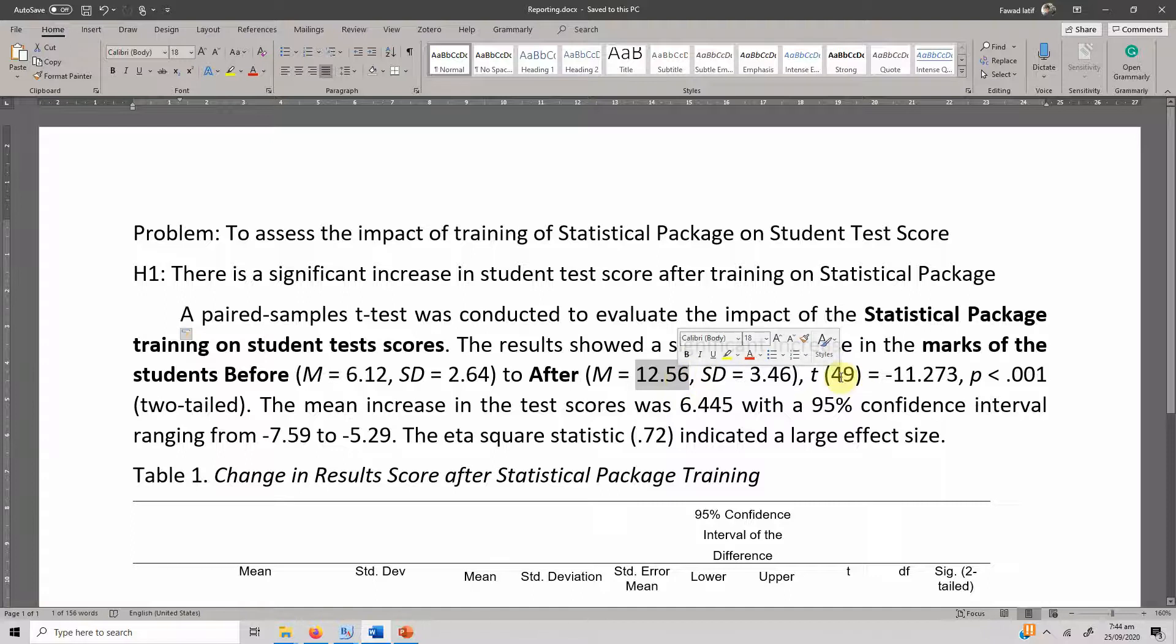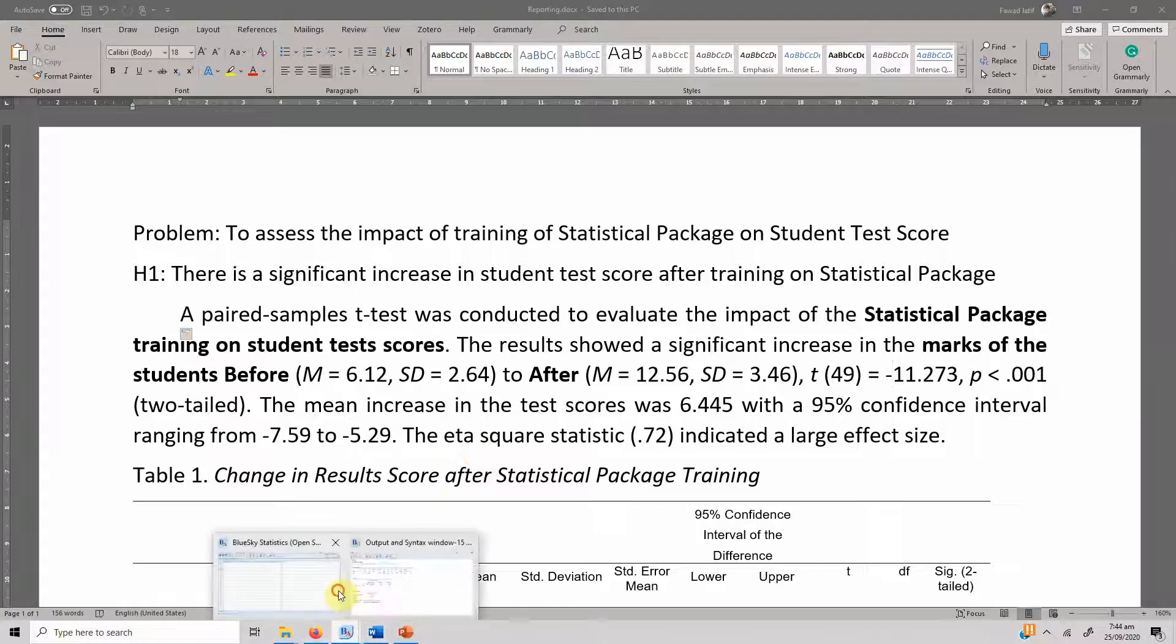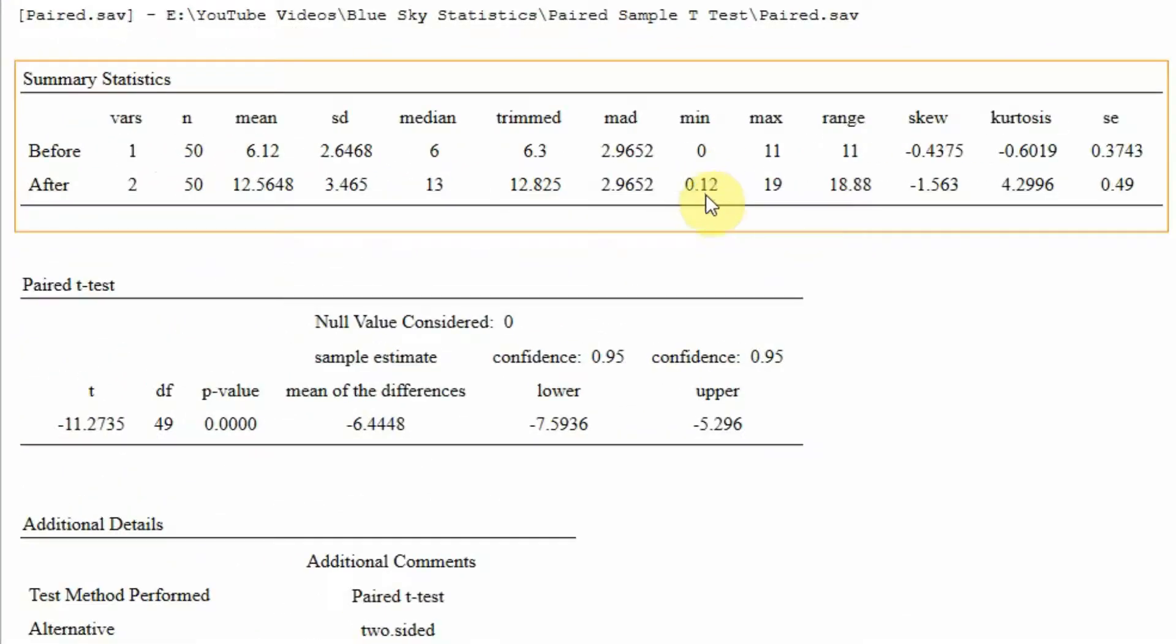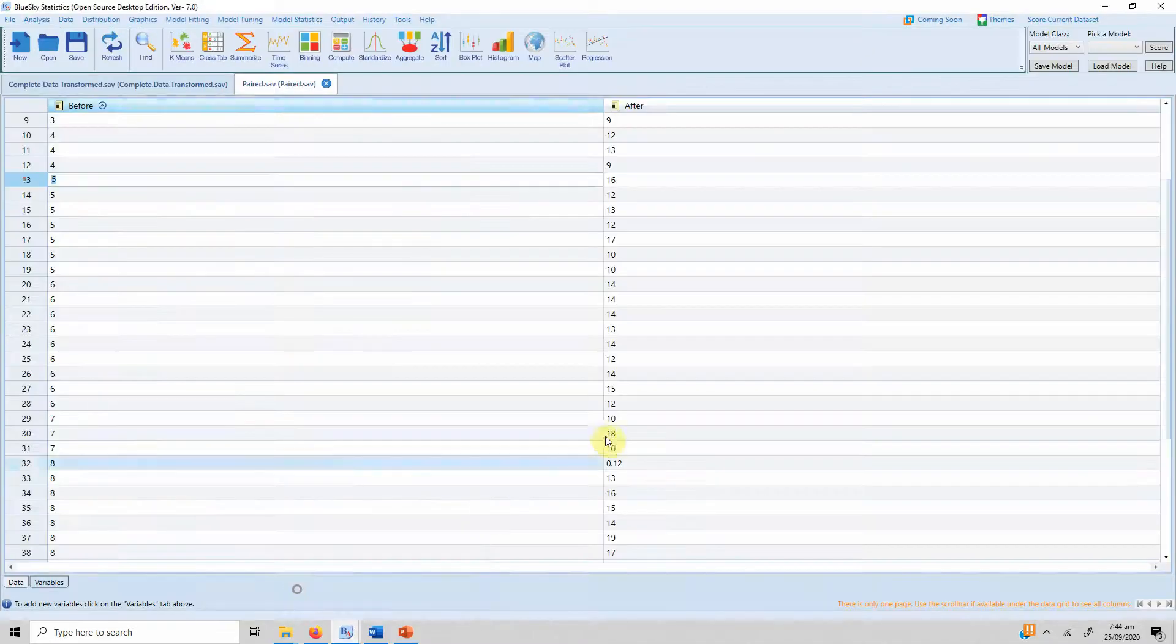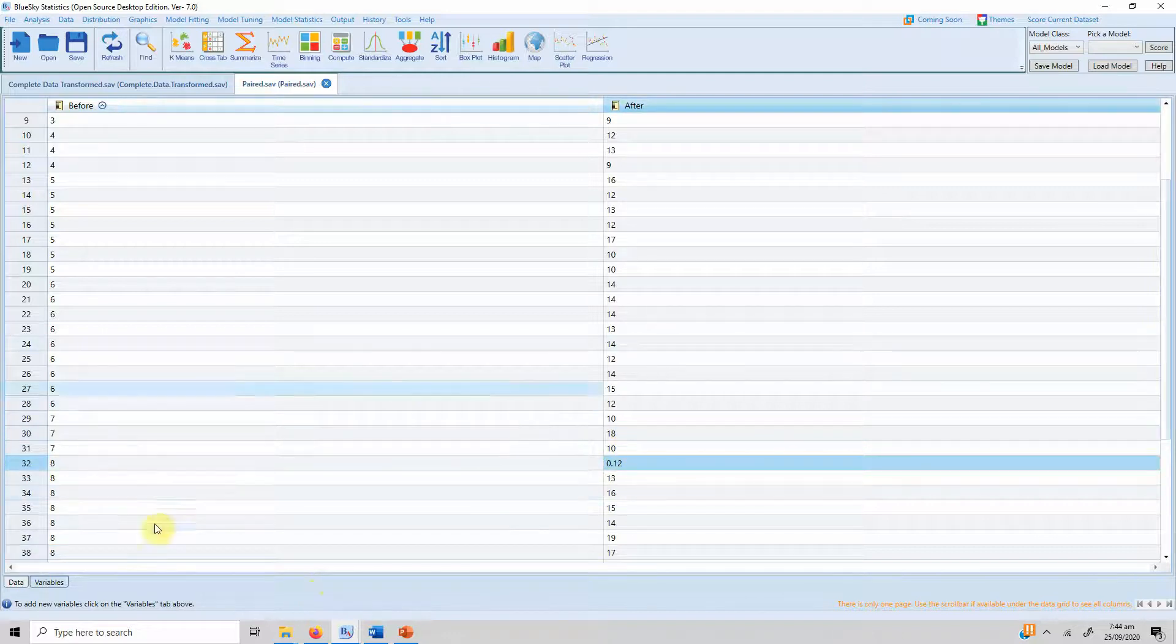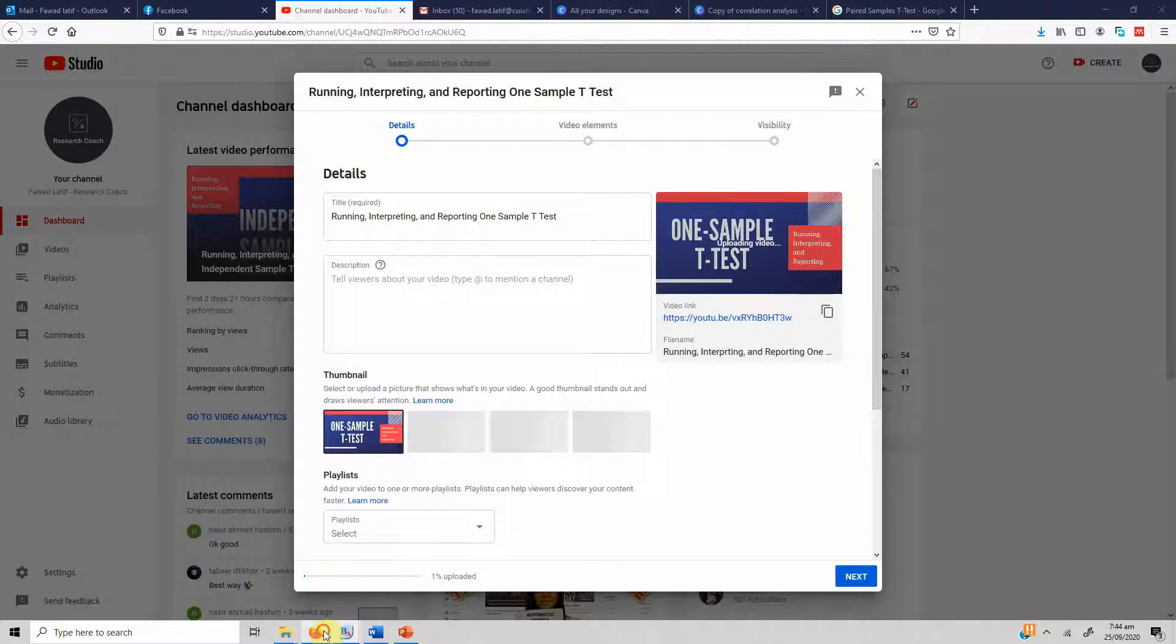And your t-value, this is your degrees of freedom, and your t-value is minus 11.273. Here it is, minus 11.273. And if you are getting confused why it is 0.12, so there is a typo in here. It should have been 12 rather than 0.12.